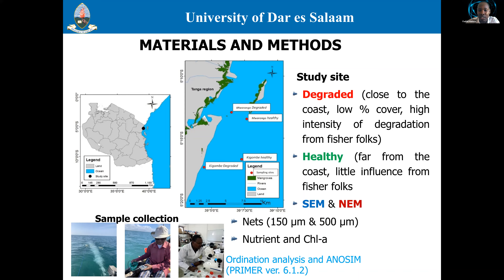Zooplankton and fish larvae were collected based on the status of seagrass, using mesh sizes of 150 micrometers for zooplankton and 500 micrometers for fish larvae. Physicochemical variables — temperature, dissolved oxygen, pH, nutrients, and chlorophyll — were recorded in the laboratory. Community structure of fish larvae and zooplankton were analyzed using PRIMER 6, whereby constrained ordination analysis was applied to examine significant differences in community structure across different habitat conditions and seasons.